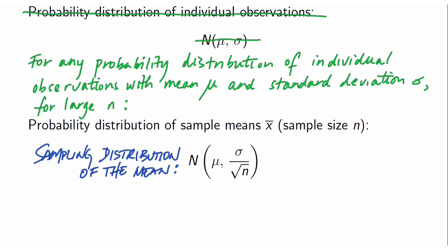For now, the important concept is understanding what happens when a study is performed. We carry out our study, we get one set of data, and we calculate one sample mean. But the outcome of a single study can be considered as a random outcome from all of the possible studies that could have been carried out under the same conditions. And the sampling distribution of the mean tells us how likely the various sample means we could get in these possible studies are.